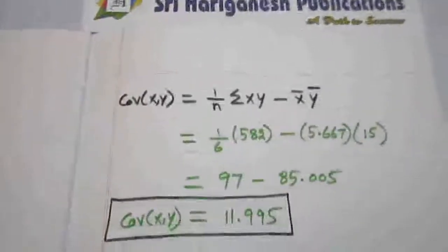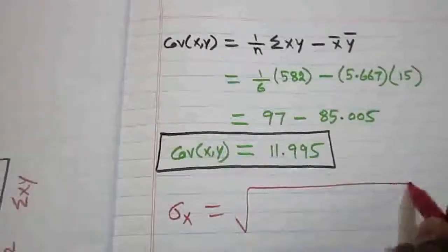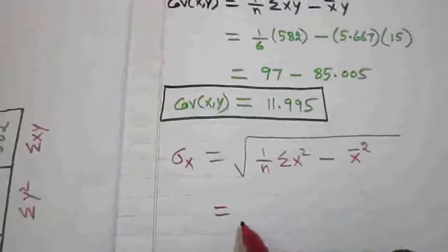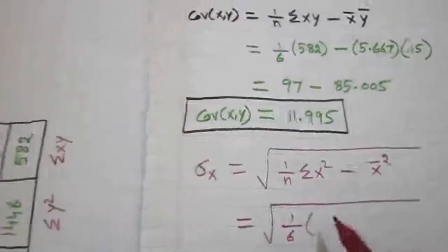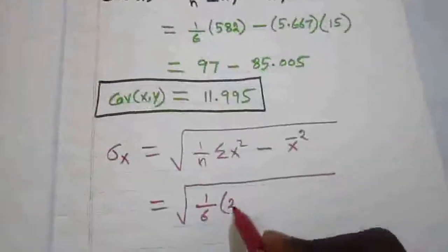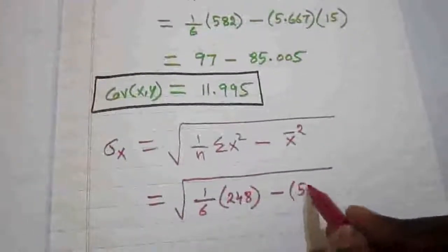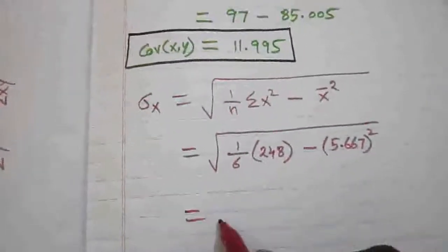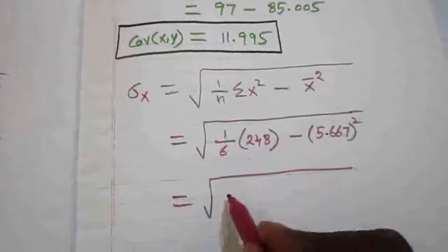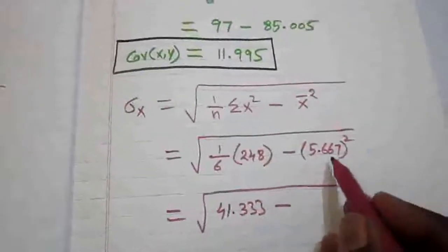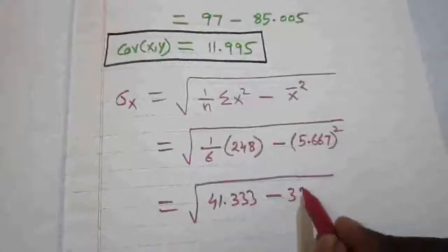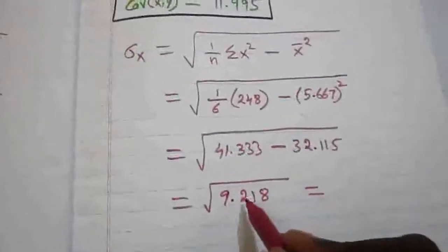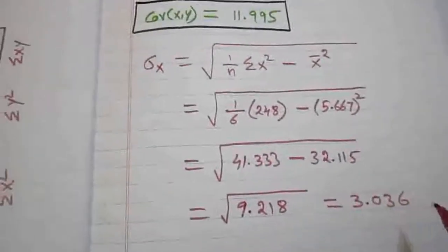Next, the denominator: σx = √(1/n · Σx² − x̄²) = √((1/6) · 248 − 5.667²) = √(41.333 − 32.115) = √9.218 = 3.036. So σx = 3.036.